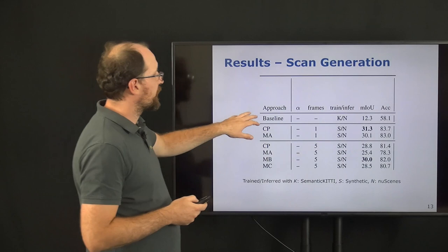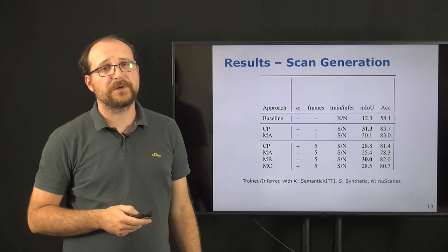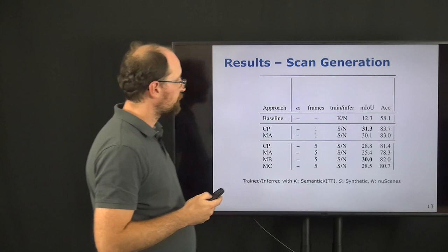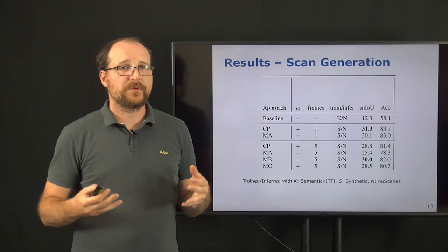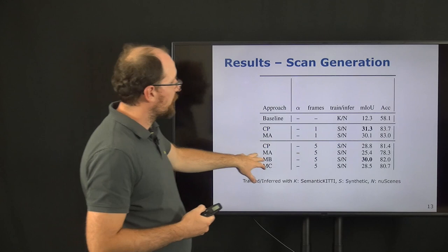For the scan generation, we can now see the following. When we have the baseline approach, which is just trained on the KITTI dataset, we see that we get in the end something around 12.3 percent mean intersection over union. When we now apply with a single scan our closest point method, we can substantially increase this to 31.3 percent. Here, the mesh-based approach doesn't show an advantage. When we now use multiple scans to generate this point cloud and the labeled range image, and use this in the TSDF to get the mesh approach, we get then an increase for the mesh-based approach.